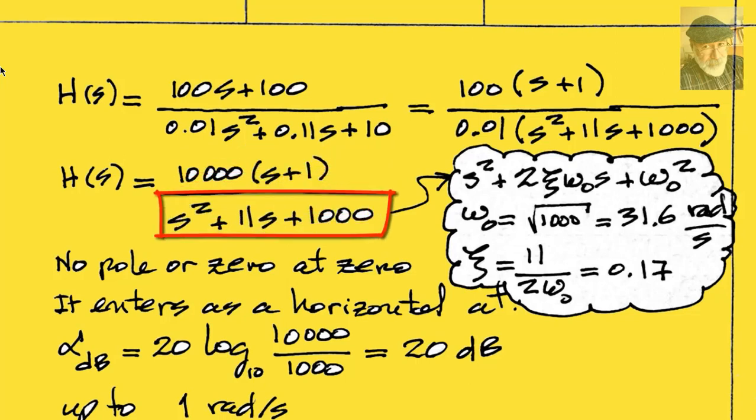What about the denominator? Is this quadratic polynomial an indication of a pair of complex conjugate poles at the square root of 1,000? Or merely the product of the terms of two simple poles?